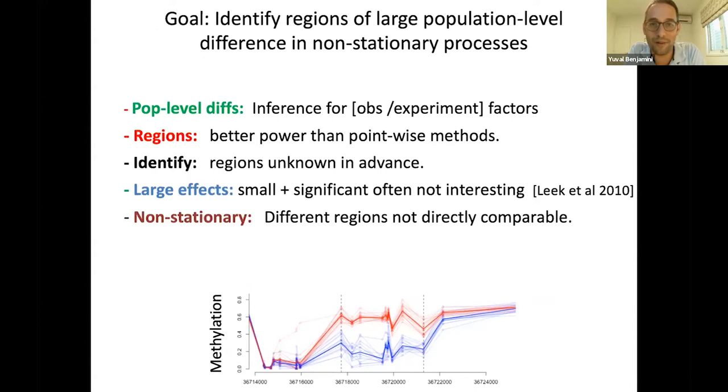The goal is to identify regions of large population level differences in the methylation process, which is non-stationary. We observe samples from two types of tissue and we are looking for differences that generalize. We're looking for regions because we think the effect of methylation is not per individual site. Also we hope that if we look for regions, we have better power to detect. We look for large effects because even if the effects are significant but tiny, they might not have any biological meaning.